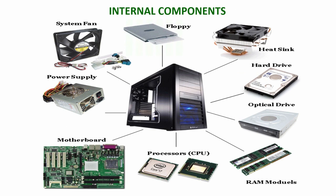The internal components inside a computer's control unit include the motherboard, processors, RAM, optical drives, hard drive, heat sink, floppy disk, system fan, and power supply. All these components are connected to the motherboard either directly or through a PCI card. The processor and RAM are connected directly to the motherboard, while the hard drive and optical disk drive are connected via a SATA cable or IDE cable.